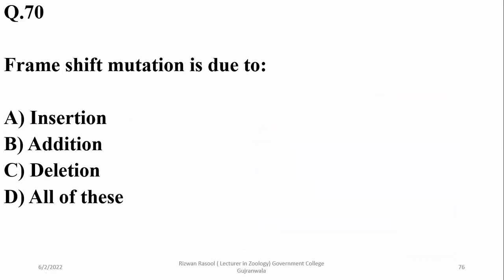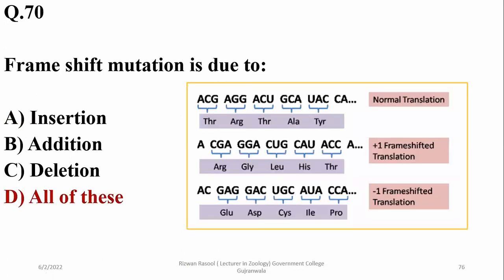Number 70. Frame shift mutation is basically due to insertion, addition, or deletion. Normal translation, plus one addition or insertion in translation, will cause a shift in the complete sequence.